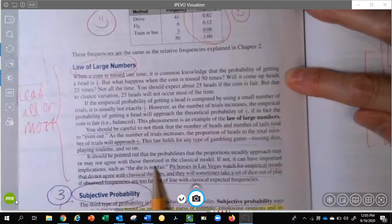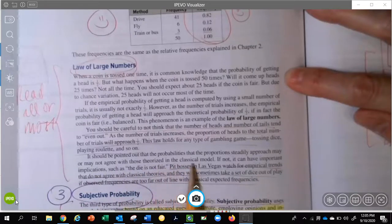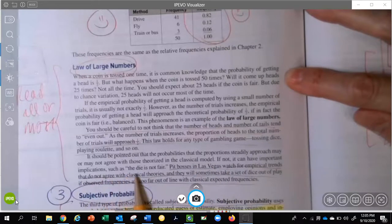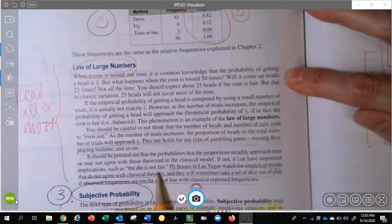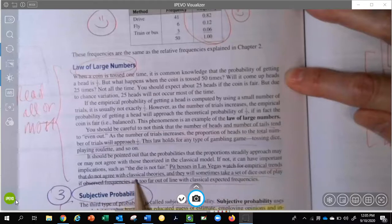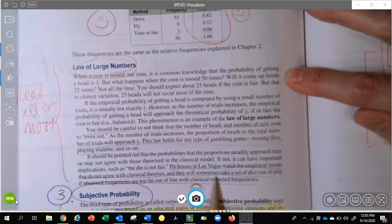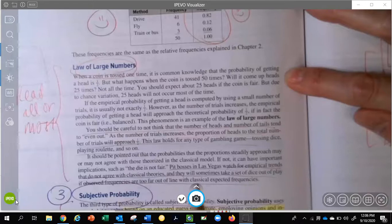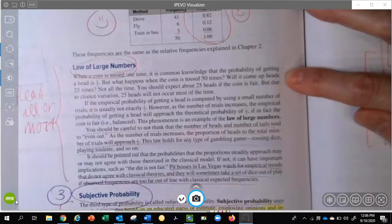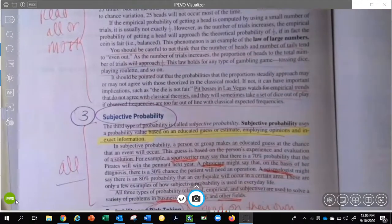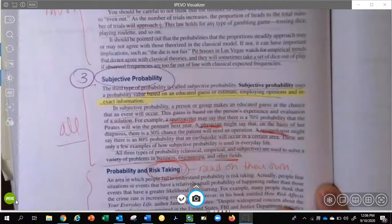And it should be pointed out that the probabilities that the proportions steadily approach may or may not agree with those theorized in the classical model. If not, it can have important implications, such as the die is not fair. Pit bosses in Las Vegas watch for empirical trends that do not agree with classical theories. And they'll sometimes take a set of dice out of play if observed frequencies are too far out of line with classical expected frequencies. I think that's pretty cool. So that brings us to our last probability, and the title of it is subjective probability.